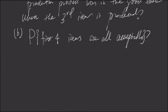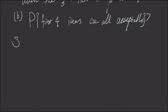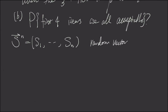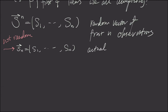To solve the question we proposed in the previous video, we have to first introduce some notations. The first notation is capital S with superscript n — this is the random vector of the first n signals, or the first n observations. Then we use little s with subscript n, which is the actual observation and is non-random. It represents the first n observations.